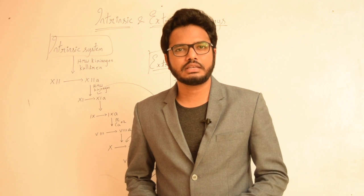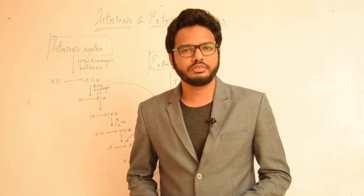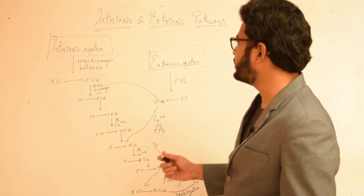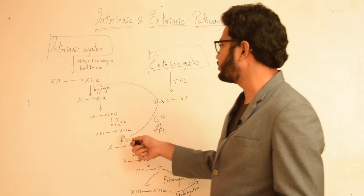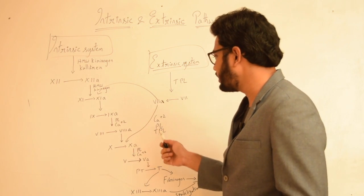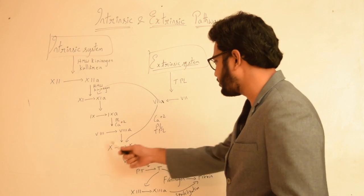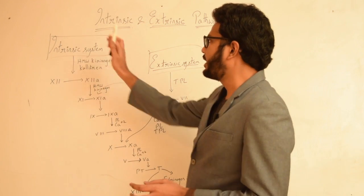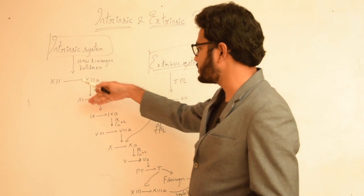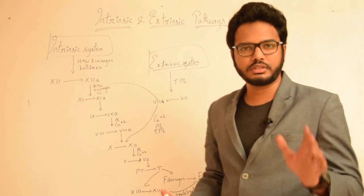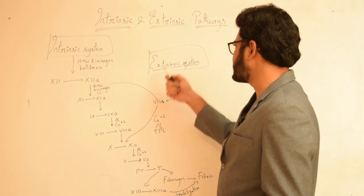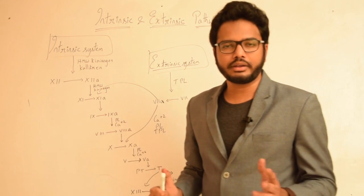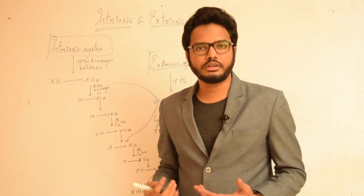In this video, let's discuss intrinsic and extrinsic pathways of coagulation — the coagulation cascade. As you can see in the flow chart, we have an intrinsic pathway and an extrinsic pathway leading to a common pathway from factor 10 activation. As the name itself indicates, all the factors involved in the intrinsic pathway are present within the blood, whereas in the extrinsic pathway, the tissue thromboplastin is not present in blood — its source is from the tissues.